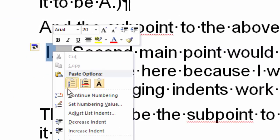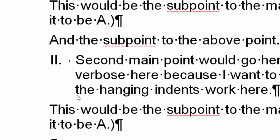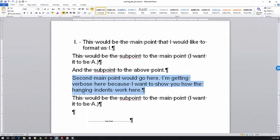In which case, I can highlight it, right-click, and I have the option to continue numbering. When I click that, I've got a 2. But let's undo that for a moment. I want to show you a different method.